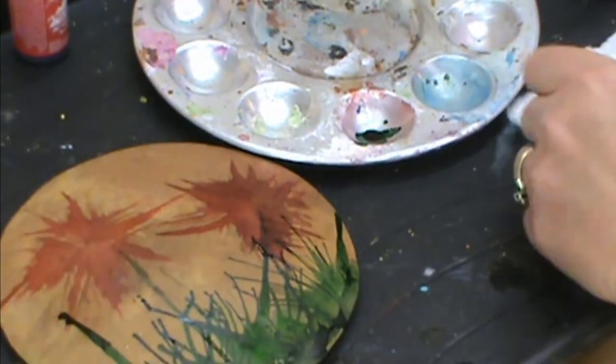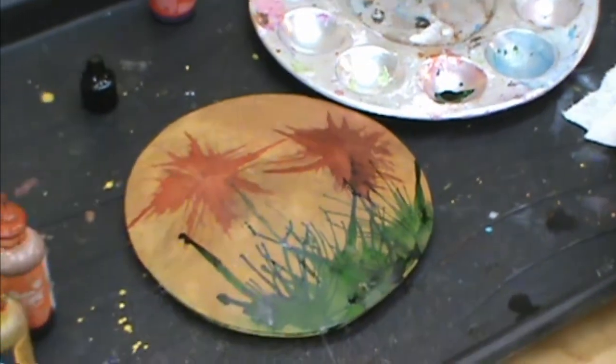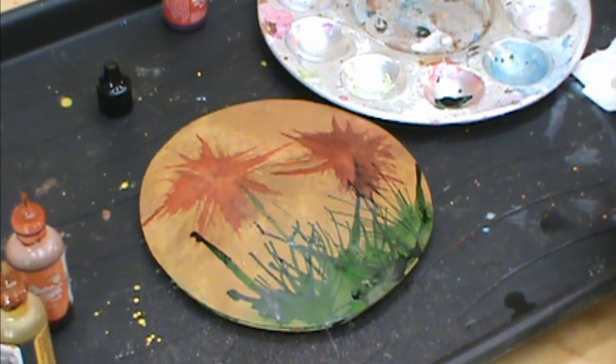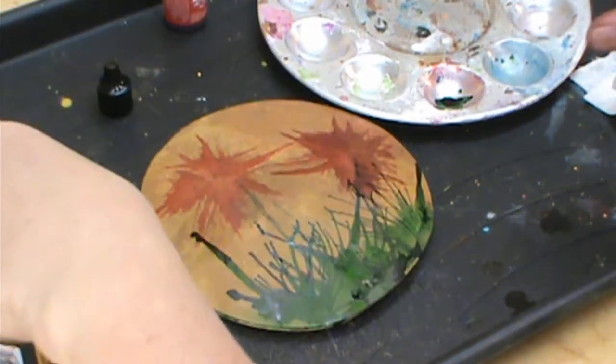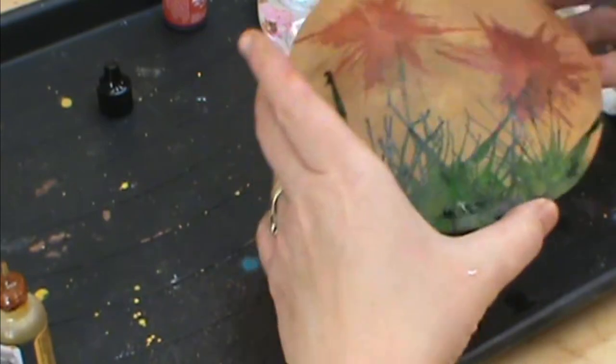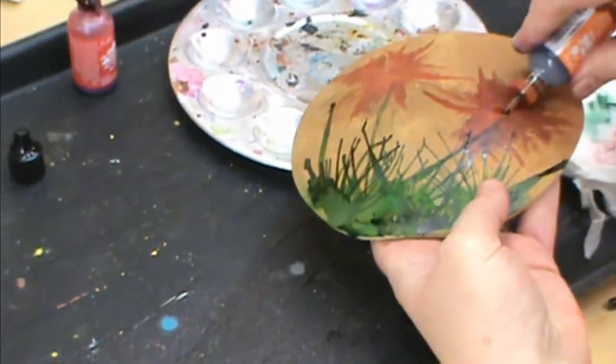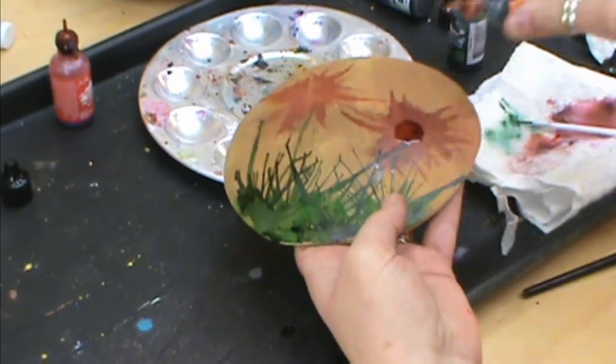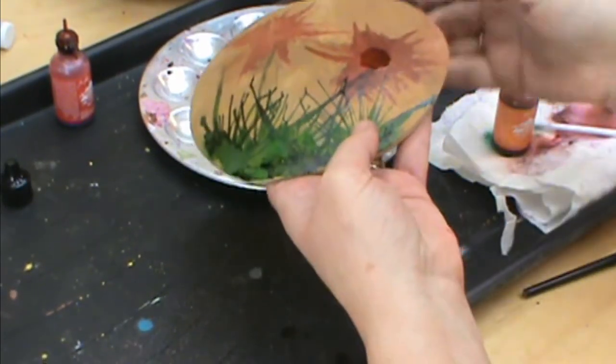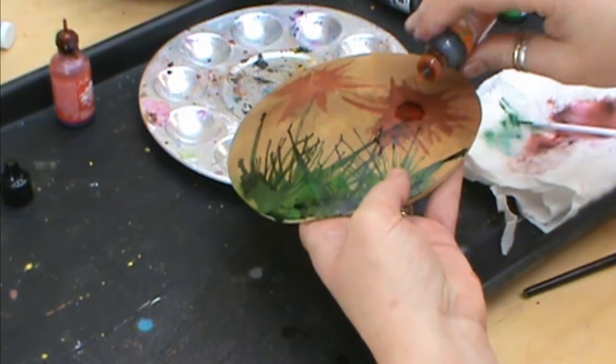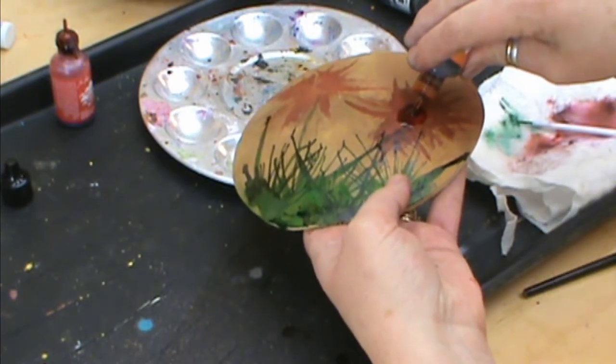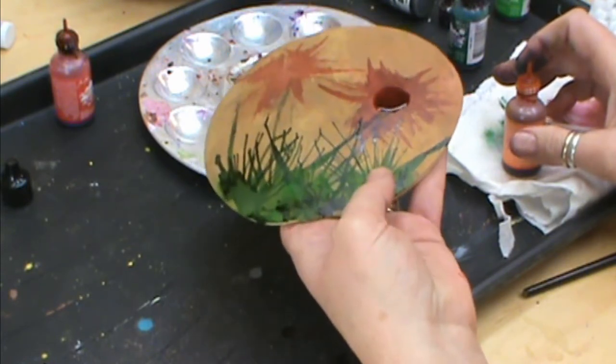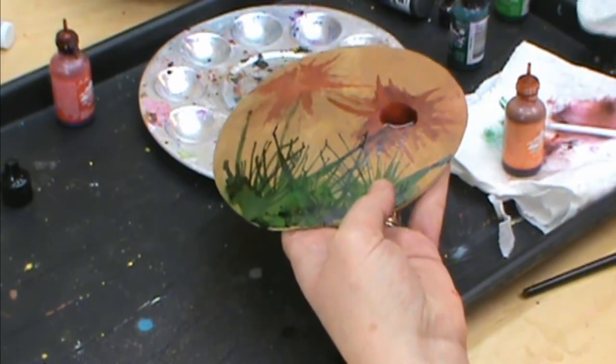Now I'm going to take another color and I'm just going to kind of drop that in there. I'm keeping it kind of flat. You don't want that to get away from me. If it starts to get away from you, then you can hit it with your cotton round.